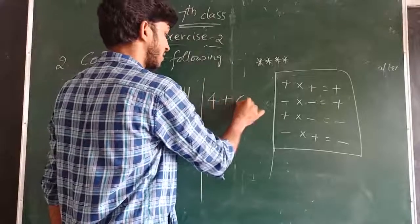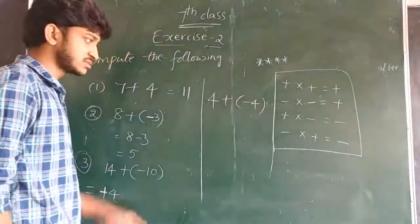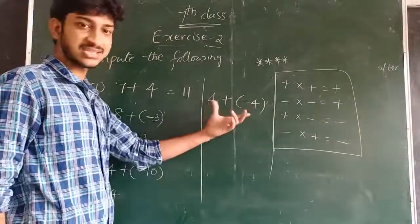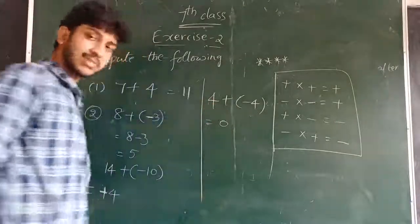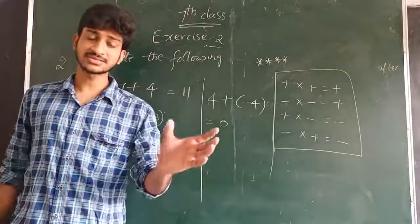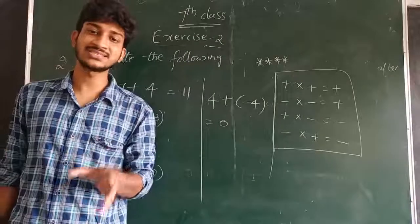4 plus minus 4. 4 plus minus 4 is given. Two different signs, so we subtract. 4 minus 4 subtraction is 0. So observe that different signs on the numbers, and when the numbers are the same, the answer is 0.